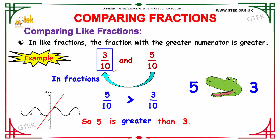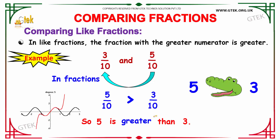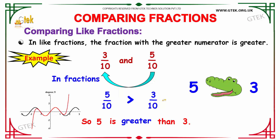Moving to the next example: we have 3/10 as the first term and 5/10 as the second term. We have the denominator 10 on both sides, so this belongs to like fractions. Looking at the numerators, 5 and 3, so 5 is greater than 3. Therefore 5/10 is greater when compared to 3/10.